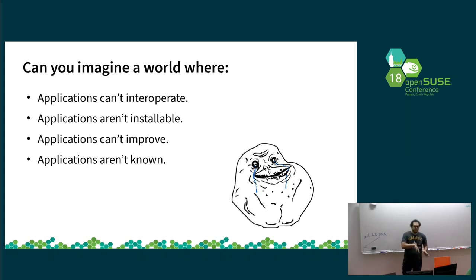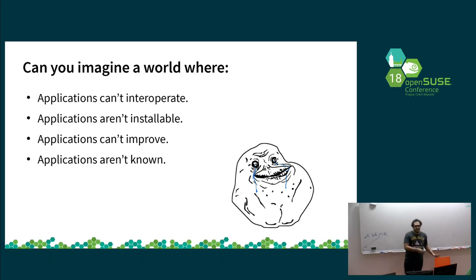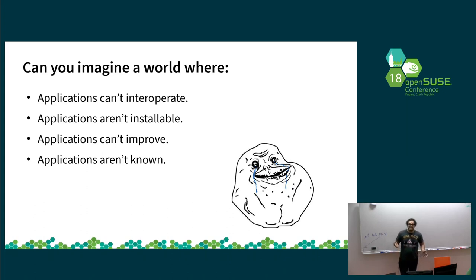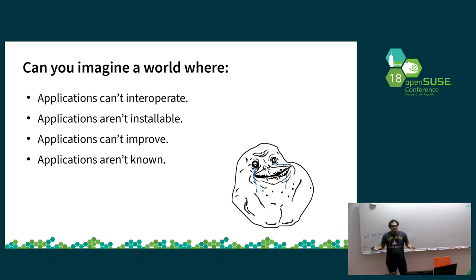Imagine a world where you cannot improve applications — where you can't say 'I found a bug, I need a fix.' That's why we have things like Windows, where we need to wait for ages before things are solved. And then there is the world where applications aren't known. There is a lot of amazing software out there, free and publicly available, but either people don't know about it or don't use it — because they cannot install it, cannot give feedback to the creators, or simply cannot interact with the software. Software is left forever alone.